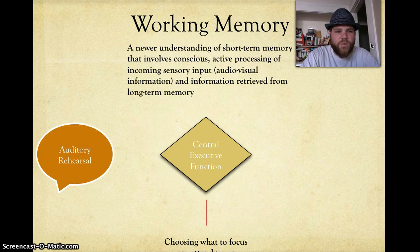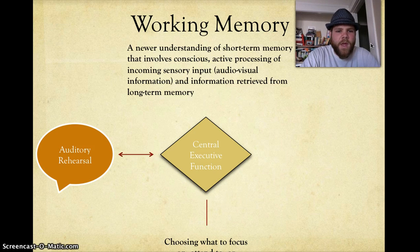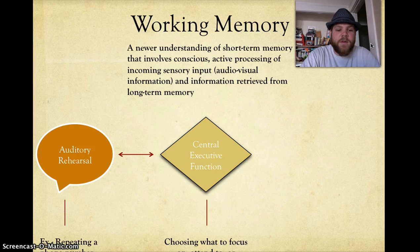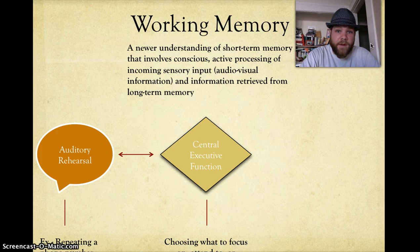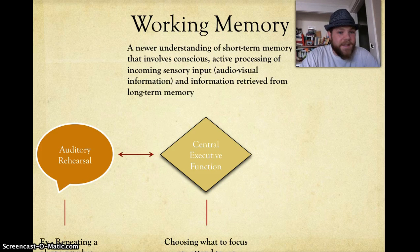On one side, the central executive function has to process auditory information. The way that auditory information gets processed into our memory is usually through repeating things. For example, whenever I want to memorize a phone number and I'm not near anything to write it down, I have to repeat it — 845, 533, 7487... I'm not very good at it; usually I forget, which is why I have to write it down immediately.